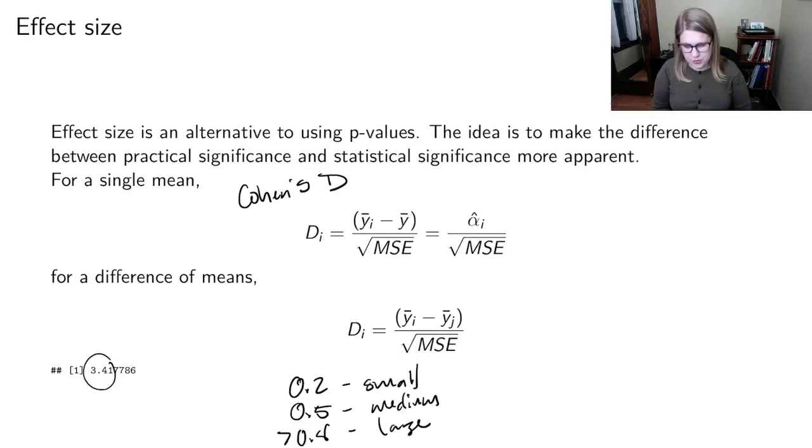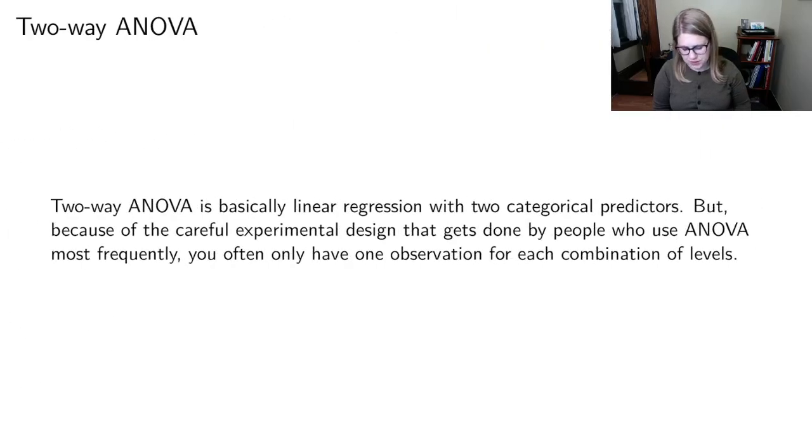All right, so that's one-way ANOVA. Most of these ideas can be extended in more complicated ANOVA situations, but sometimes they're not as easy to compute by hand. So we're also going to talk about two-way ANOVA, which is basically linear regression with two categorical predictors.